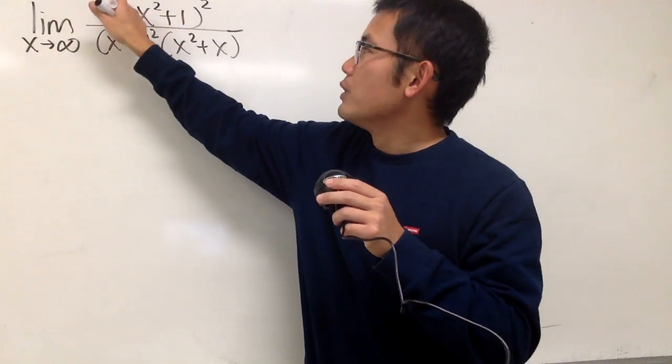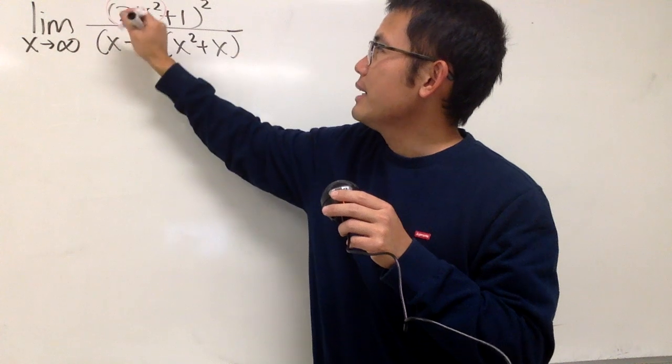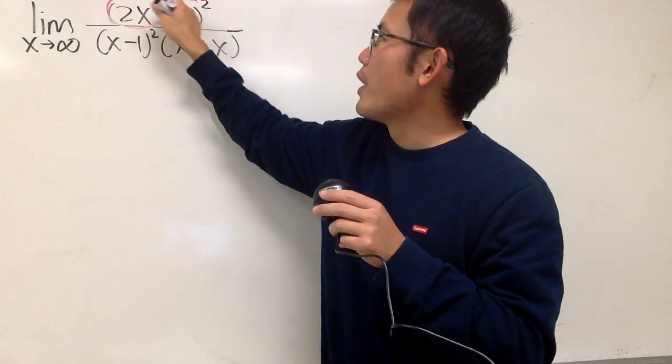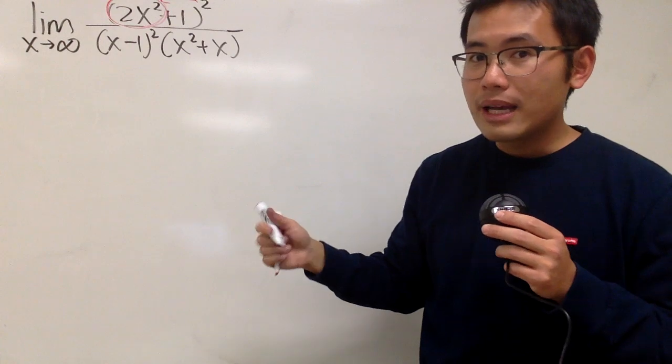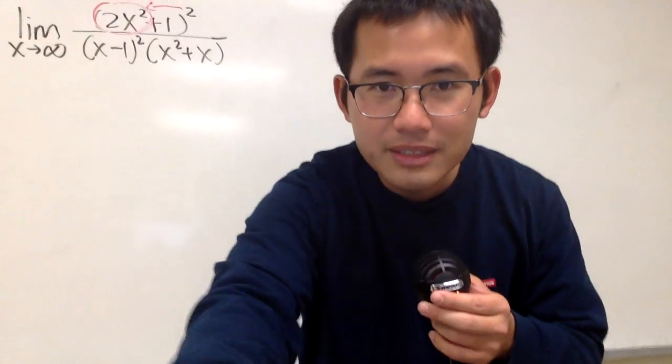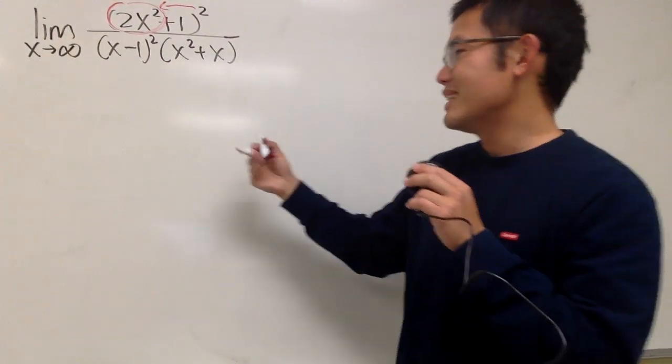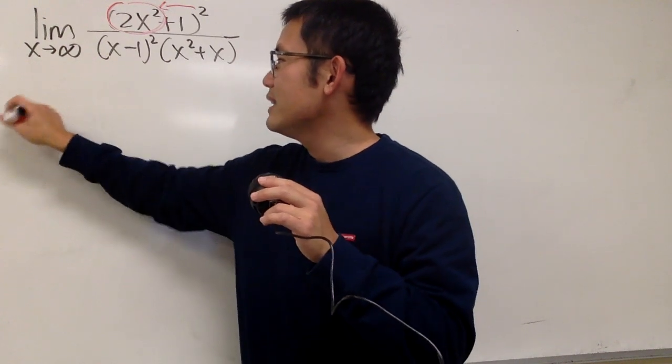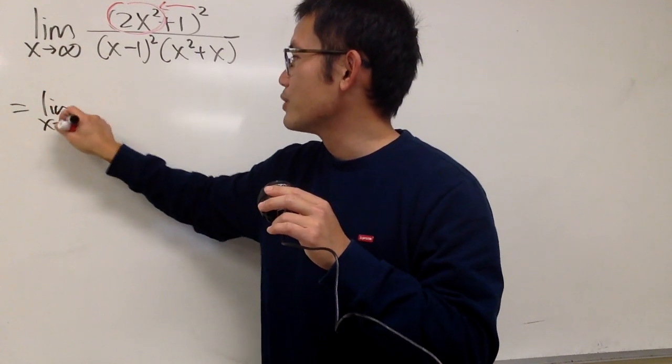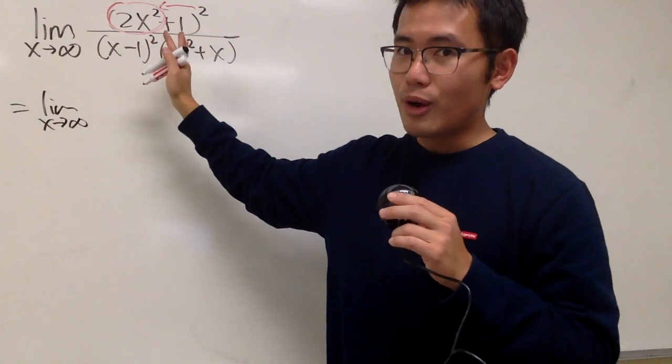you see that we have 2x squared, right? But this right here is inside of the square. So that means what? I just have to make sure you guys can see this first. So that means all we have to do is look at this as the limit as x approaching infinity. Square this term. That's all.